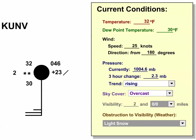At this station, the current temperature is 32 degrees Fahrenheit. Temperature is the number in the upper left of the station model. The dew point is in the lower left, so the dew point here is 30 degrees.